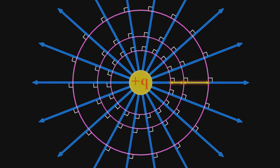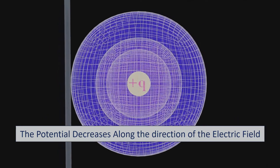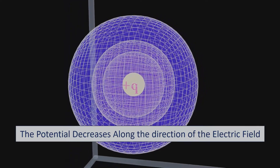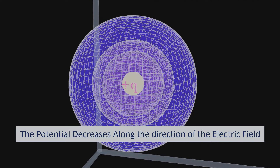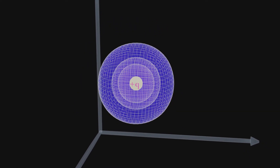Here is an important point to understand: as we get closer to the charge, the potential of the equipotential surface becomes higher, and gradually decreases radially outward. From this we can note that the potential decreases along the direction of the electric field. In 3D, we can visualize equipotential surfaces as concentric spherical shells. These shells provide a 3D representation of equipotential surfaces, similar to the concentric circles in 2D. This visualization helps us understand how potential changes around a point charge and how it relates to the electric field direction.